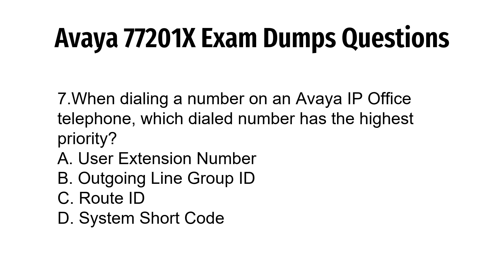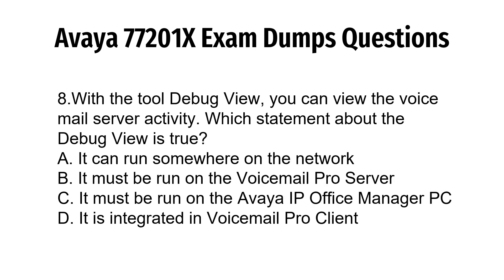Question 7. When dialing a number on an Avaya IP Office telephone, which dialed number has the highest priority? A. User extension number. B. Outgoing line group ID. C. Root ID. D. System short code.